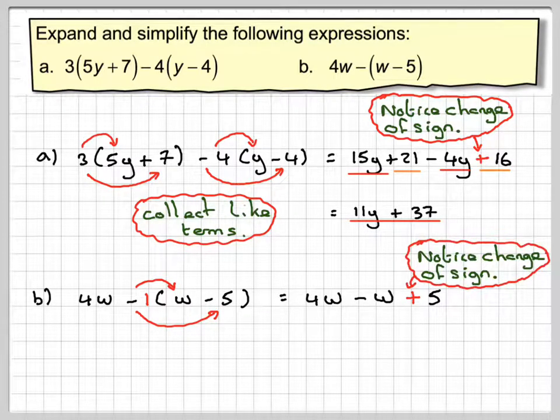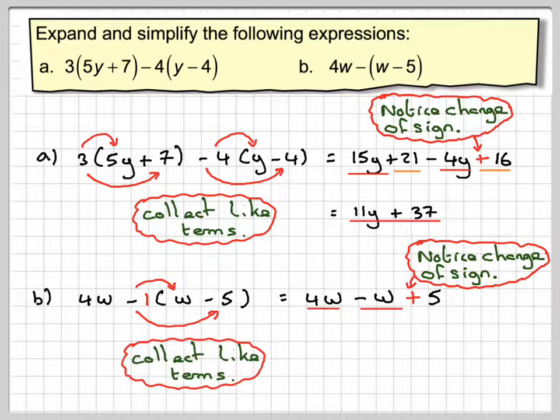What we've got to do is collect together the like terms. So 4w minus w makes 3w and then we've still got plus 5 which doesn't simplify with anything.